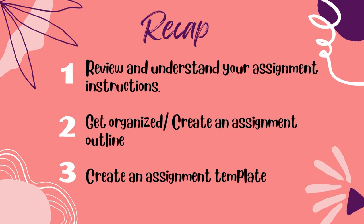Okay, let's take a moment to recap. You can make the process of writing your APA assignment very simple using these three steps. Number one: review and understand your assignment instructions. Number two: get organized and create an outline of your key talking points. And number three: create an assignment template. Once you've done all that, you're ready to rock and roll and start writing. The skill of writing in APA can seem like a lot — don't beat yourself up if you don't get it right away the first few times. Just like any skill, it will take repetition and learning from your mistakes.